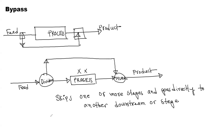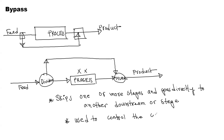Why do we do this? The final exit stream will control the composition. It is mainly used to control the composition of a final exit stream.